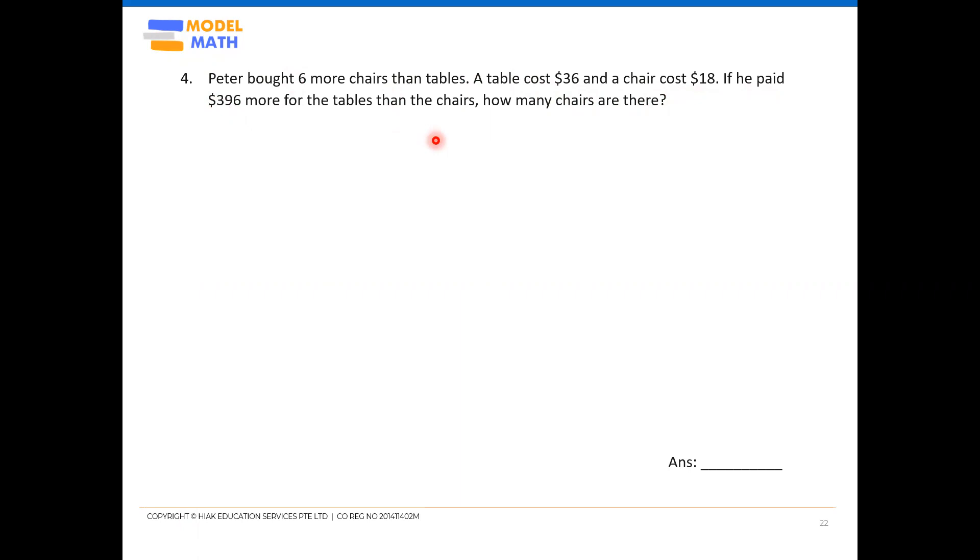All right, so as we can see, the six more chairs than tables here indicate that we must use a quantity and value model method. Okay, quantity and value table may not be the best in this case since you are given a difference. So quantity and value table will be useful only if it's like a ratio, quantity ratio given here, or if a fraction is given here.